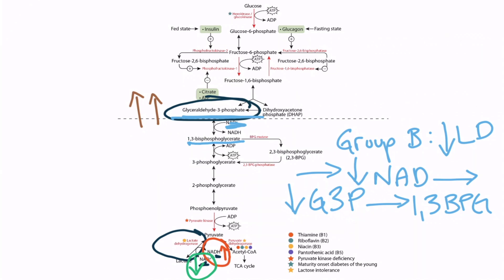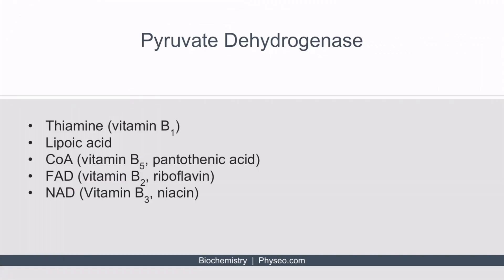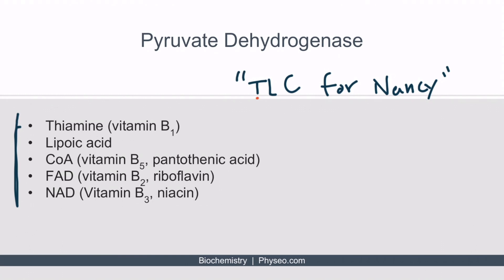Now let's talk more about pyruvate dehydrogenase. Pyruvate dehydrogenase is actually a complex that consists of multiple enzymes and requires several cofactors for optimal activity. These include thiamine, lipoic acid, CoA, FAD, and NAD. These can be remembered with the mnemonic TLC for Nancy: T for thiamine, L for lipoic acid, C for CoA, F for FAD, and N for NAD. The B vitamins are incredibly high yield, and there is a separate video for this topic, but take some time to commit this to memory.